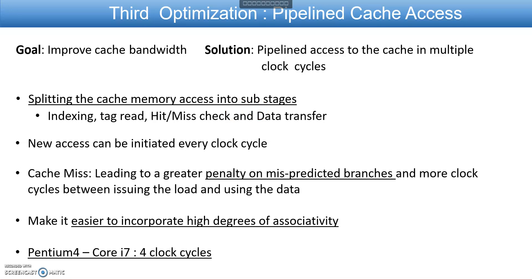An additional advantage of pipeline cache access is that it is easier to incorporate a higher degree of associativity. Intel-based processors from Pentium 4 through Core i7 use 4 clock cycles to access the cache.